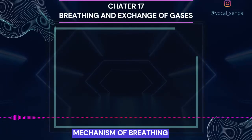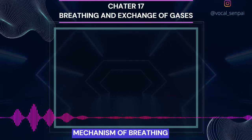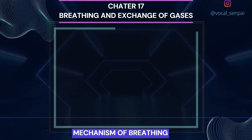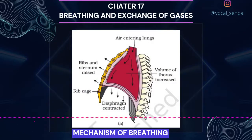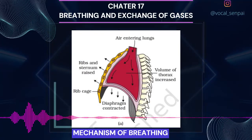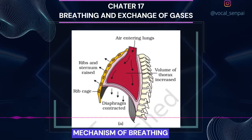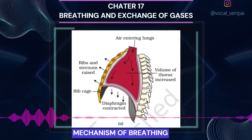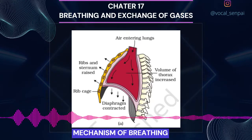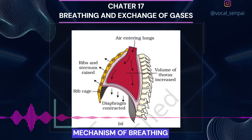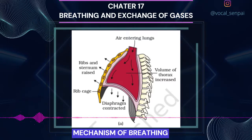Mechanism of Breathing: Breathing involves two stages — inspiration, during which atmospheric air is drawn in, and expiration, by which the alveolar air is released out. The movement of air into and out of the lungs is carried out by creating a pressure gradient between the lungs and the atmosphere. Inspiration can occur if the pressure within the lungs (intrapulmonary pressure) is less than the atmospheric pressure, i.e., there is a negative pressure in the lungs with respect to atmospheric pressure. Similarly, expiration takes place when the intrapulmonary pressure is higher than the atmospheric pressure. The diaphragm and a specialized set of muscles — external and internal intercostals between the ribs — help in generation of such gradients.